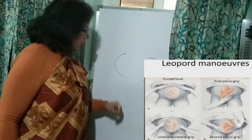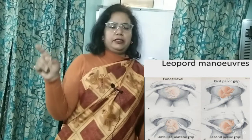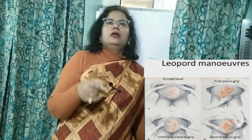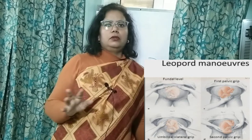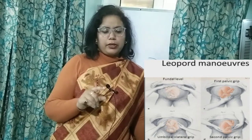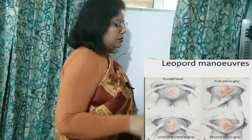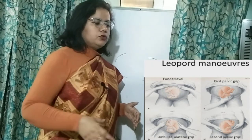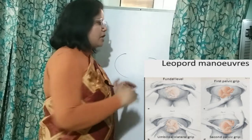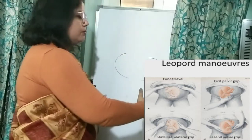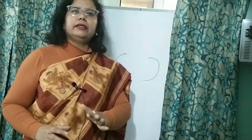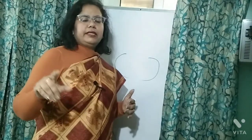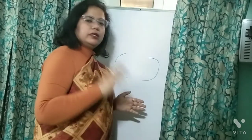These obstetric grips are also named after Leopold, but the numbering differs from Pollock's naming — for example, the first pelvic grip by Pollock is the second by Leopold. Don't be confused by the difference in names; what is more important is how to perform them. Always do them in continuity: start with the fundal grip using both hands, then move laterally with both hands, then first pelvic grip with both hands facing the feet, and finally the second pelvic grip with your right hand facing the woman.